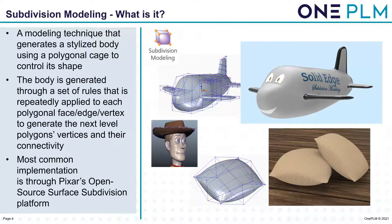So subdivision modeling — what is it? This is a modeling technique that generates a stylized body using a polygon cage to control its shape. We don't physically touch the body itself; we just control the cage. The body is generated through a set of rules repeatedly applied to each polygon vertex, edge, polygon face, or vertex to generate the next level of polygons, vertices, and their connectivity. This will make more sense when we see it in action.